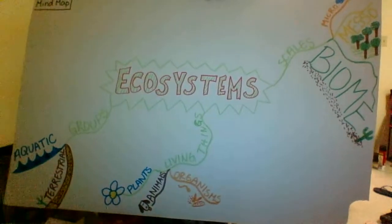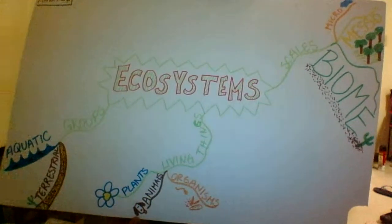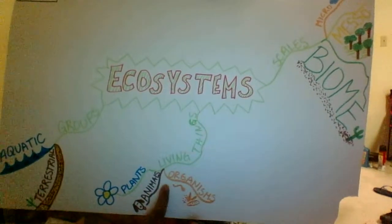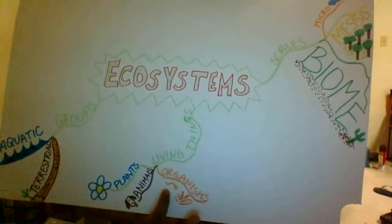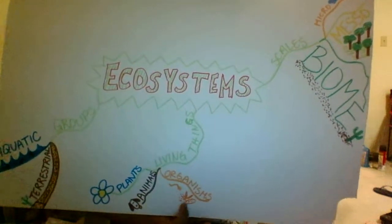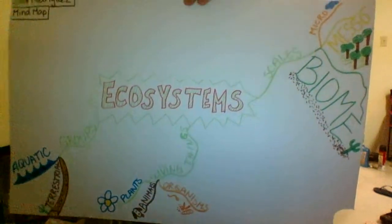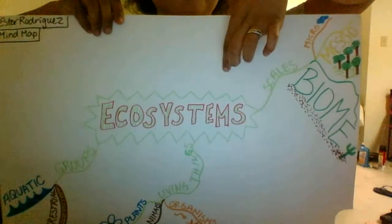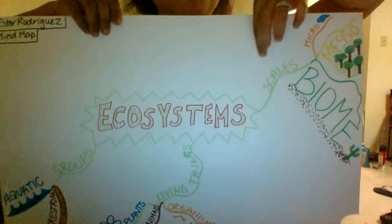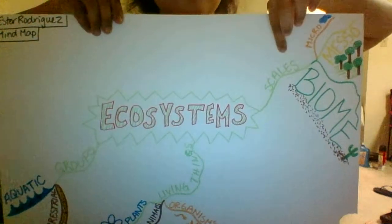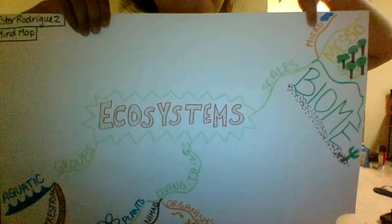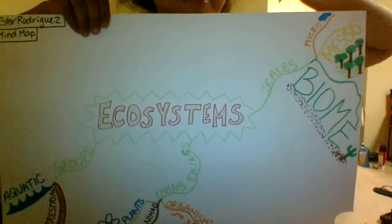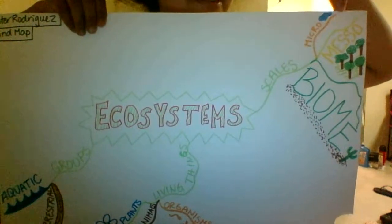— animals (I drew a dog), and different organisms — I tried to draw some bacteria here. On this side, ecosystems are also grouped by scale or size: micro, which I wrote really tiny next to a little puddle;